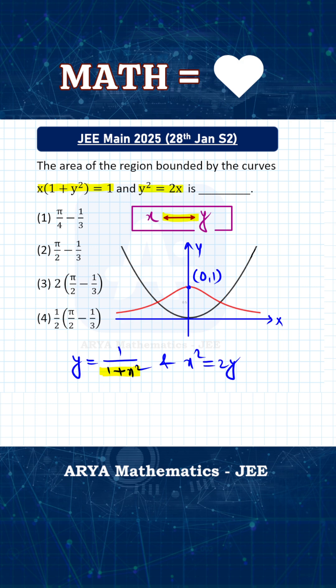So this red graph is graph of y equals to 1 by 1 plus x square, and the black one is graph of this parabola x square equals to 2y. So these are the two graphs.